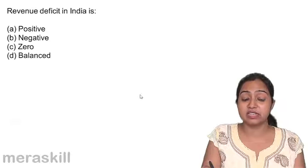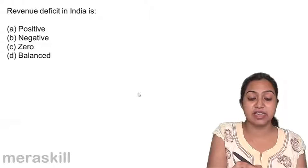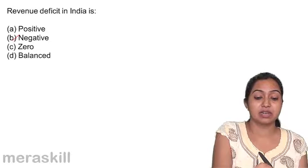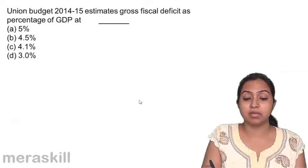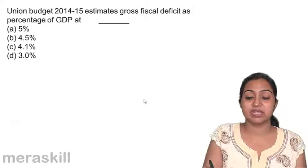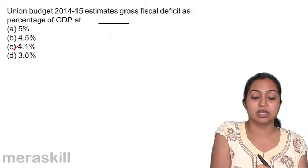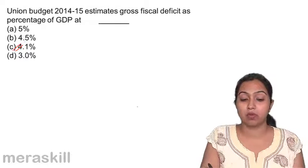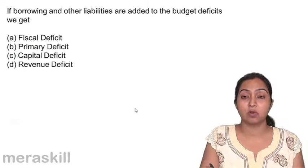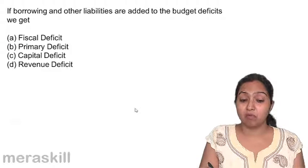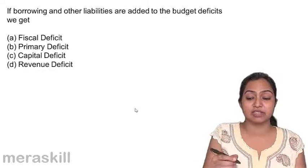Revenue deficit in India is negative — we know that the revenue deficit in India is negative; it is definitely less. The Union Budget 2014-15 estimates gross fiscal deficit as 4.1%. In 2013-14, it was 4.5%, and it has reduced again in 2014-15 to 4.1%. If borrowing and other liabilities are added to the budget deficit, we get fiscal deficit.